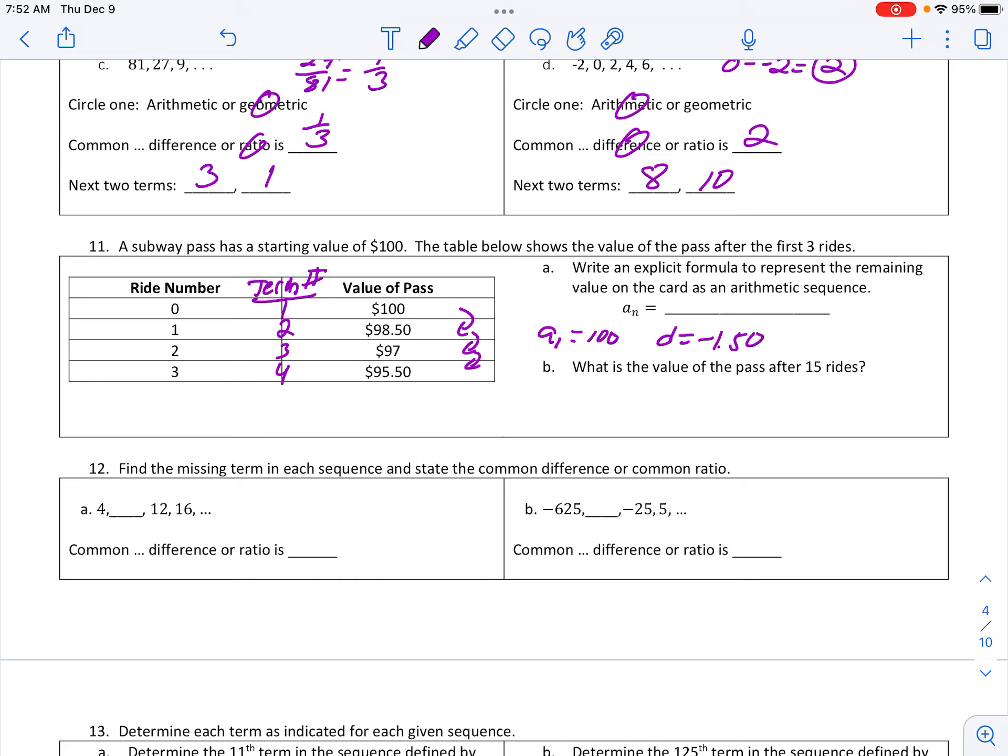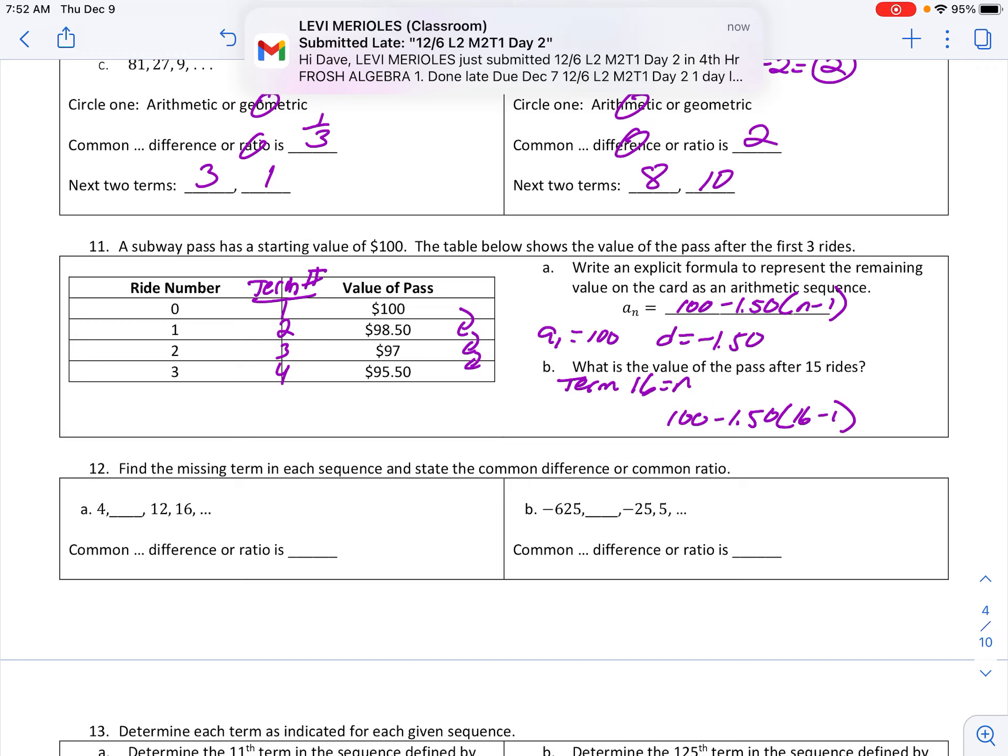Okay, with that in mind, I've got my formula there. Starting off with $100, losing $1.50 each time, N minus one. Now here is the key on this one. When I'm talking about 15 rides, 15 rides means I'm not talking about term 15. Ride 3 is term 4, ride 2 is term 3, and so on. So technically, I'm talking about term 16. So I'm going to plug in N as 16 there, because if you don't, you are going to be off. So I'm going to do a little mental math and go 16 minus 1 is 15.